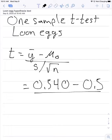We then divide by the standard deviation, 0.399, divided by the square root of 60, the number of samples we have.